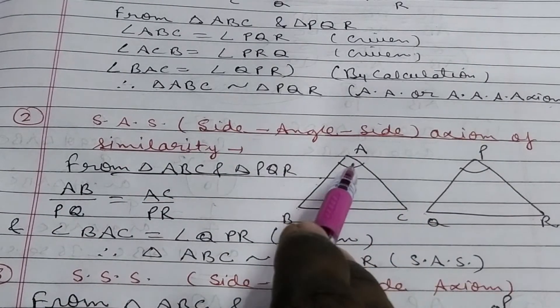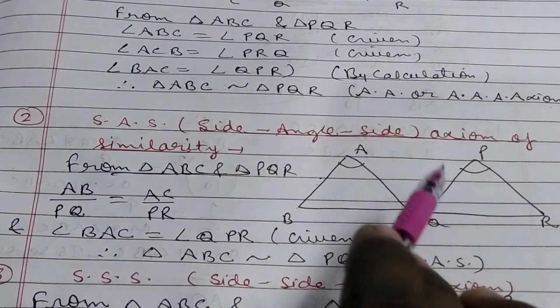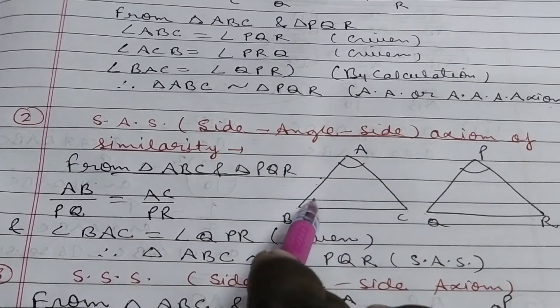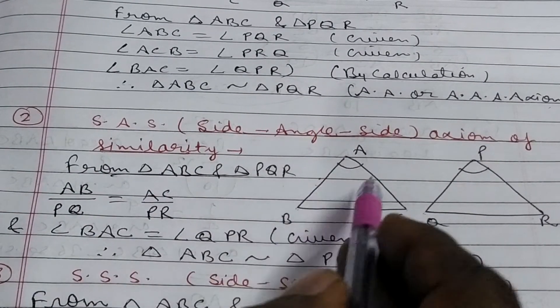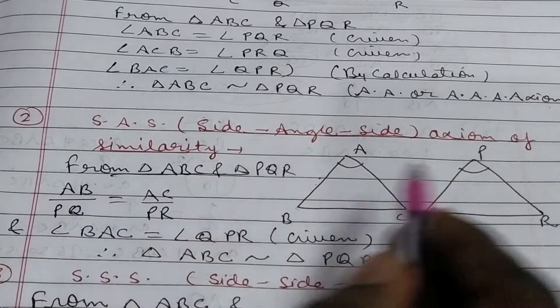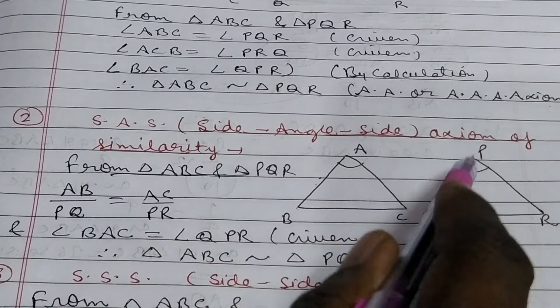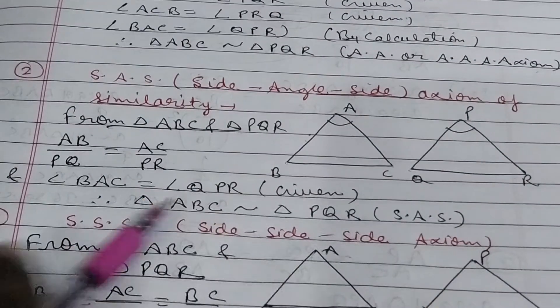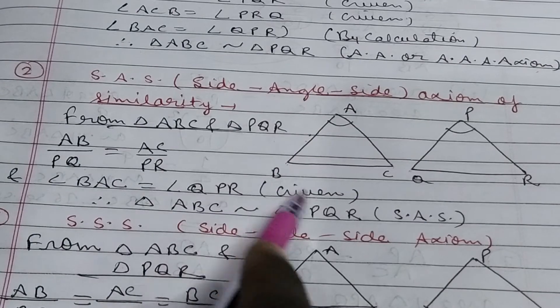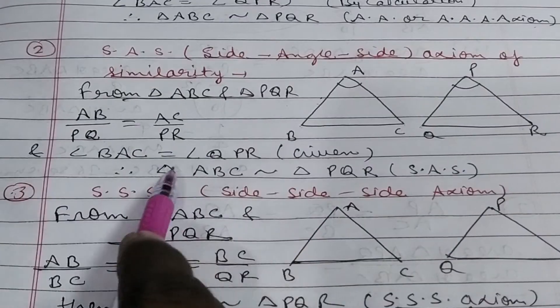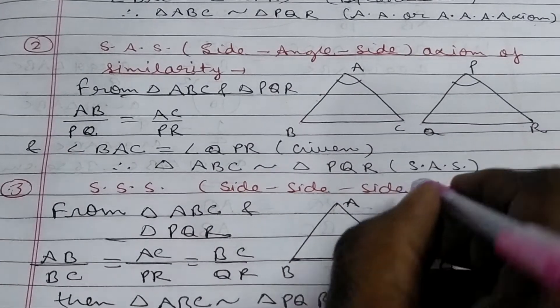Again, it should be noted that, angle between two proportional sides should be equal, not any other way. From triangle ABC and PQR, which two sides are proportional? Suppose AB and PQ equal, you will write AB upon PQ equals to AC upon PR. And angle between them, BAC and QPR are also equal. Suppose given, then you can say that triangle ABC is similar to triangle PQR, which is SAS property.